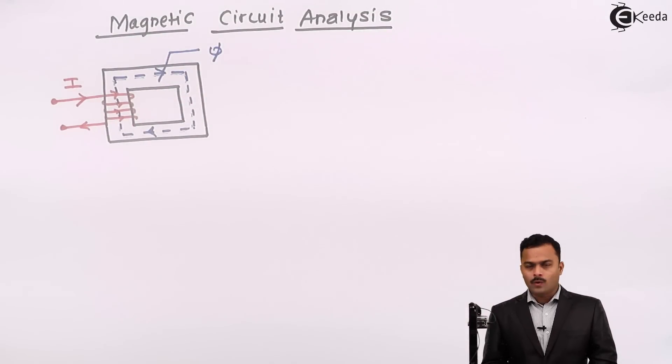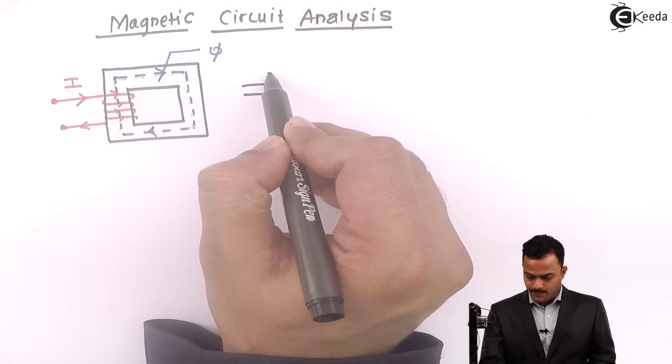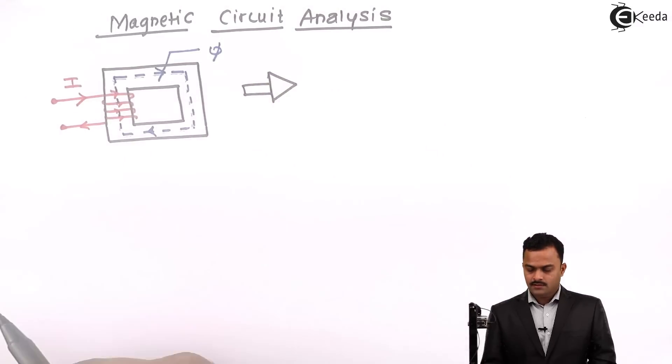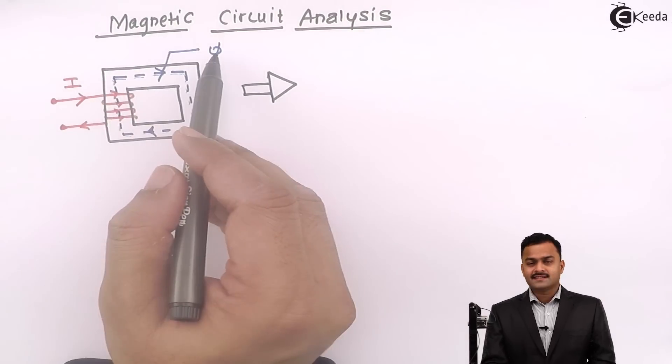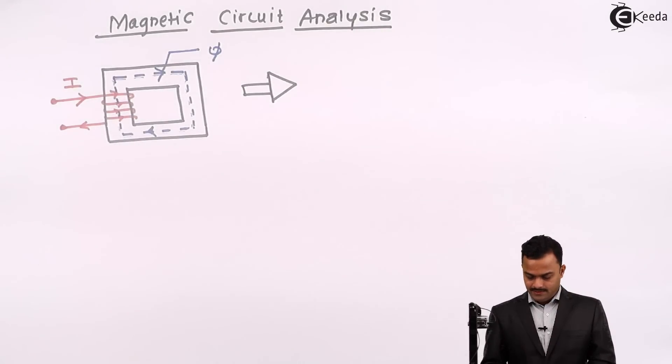If I want to convert this into an electric circuit for our analysis purpose, it will look like this. Flux is there, hence MMF will be there. Number of turns are, say, N.